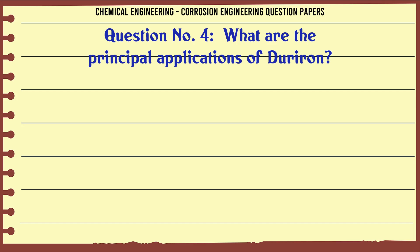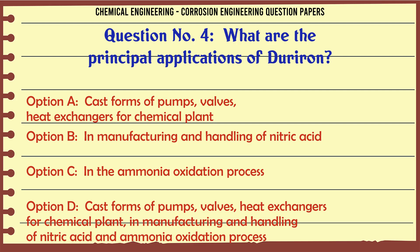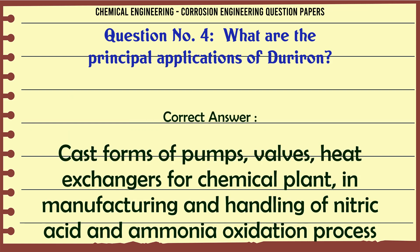What are the principal applications of Duriron? A. Cast forms of pumps, valves, heat exchangers for chemical plant. B. In manufacturing and handling of nitric acid. C. In the ammonia oxidation process. D. Cast forms of pumps, valves, heat exchangers for chemical plant, in manufacturing and handling of nitric acid, and the ammonia oxidation process. The correct answer is D.